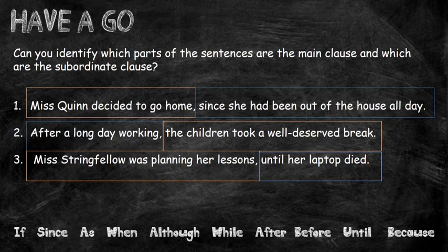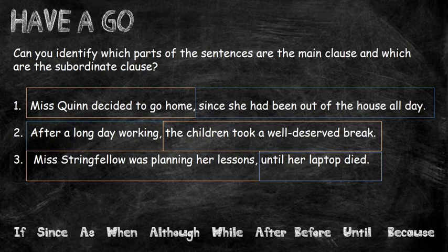In sentence number three: Miss Stringfellow was planning her lessons until her laptop died. The main clause is 'Miss Stringfellow was planning her lessons' — it starts with the subject, and the verb is 'was planning.' The subordinate clause is 'until her laptop died' because it begins with the subordinating conjunction 'until.'